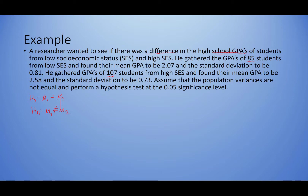We need to decide which group is one and which is two. I'll go with the order they appeared in the problem, so low SES is group one. From the problem: n₁ = 85, sample mean x̄₁ = 2.07, and sample standard deviation s₁ = 0.81.